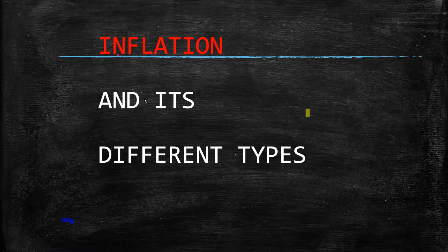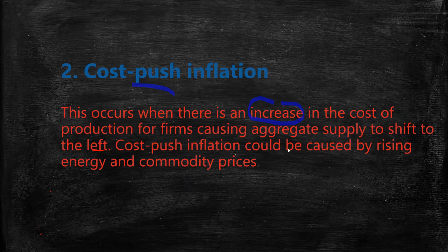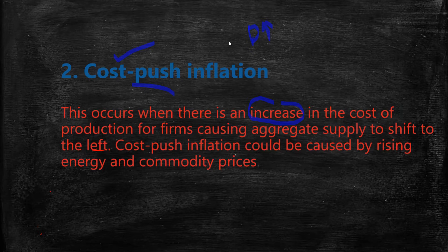Welcome to the lecture. We were dealing with inflation and its types, and we had completed demand-pull inflation. Today we will be dealing with cost-push inflation. Cost-push inflation occurs when there is an increase in the cost of production of the firms, causing the aggregate supply to shift to the left. In demand-pull inflation, aggregate demand is increasing, whereas in cost-push inflation, cost is increasing.